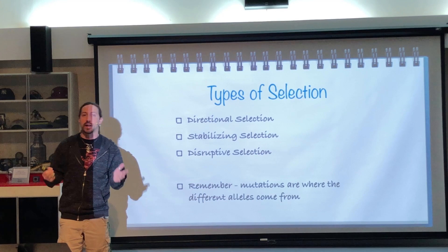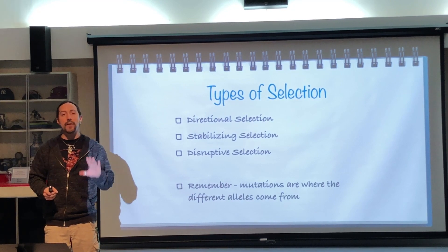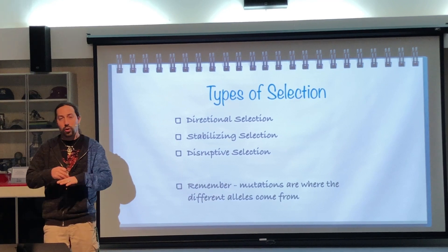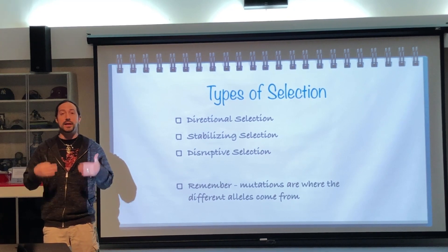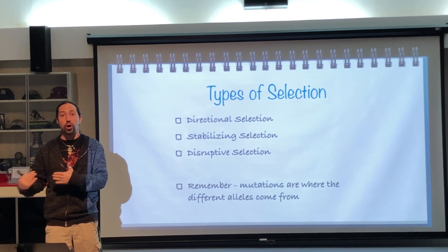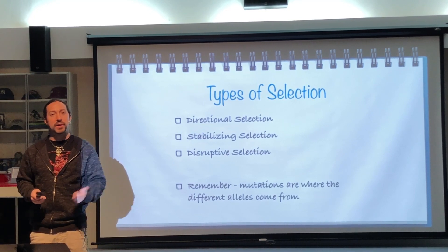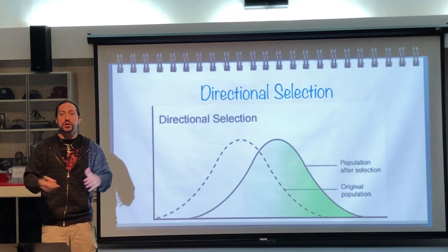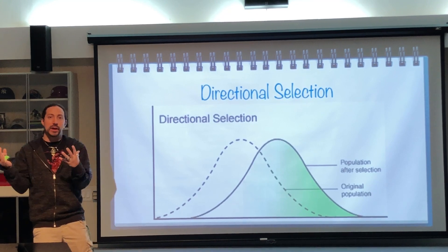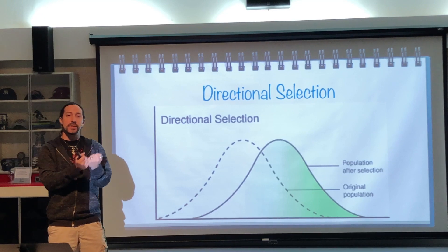The different types of selection that can occur are directional, stabilizing, or disruptive selection. All variation within a population is due to mutations that have occurred over time, because when DNA is replicated it doesn't get replicated perfectly — that is the foundation of new alleles. In directional selection, one extreme trait is favored, causing the entire population to shift toward that trait — a directional shift away from what was previously the most common trait.